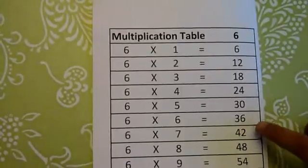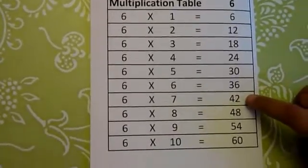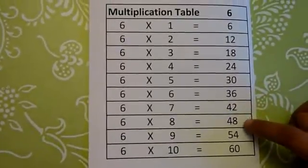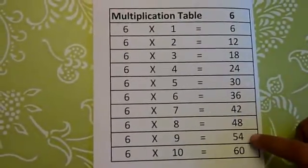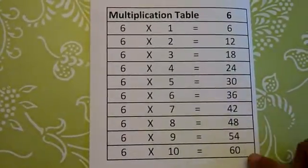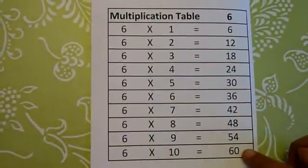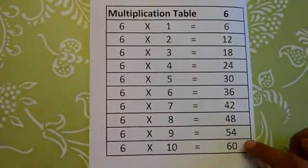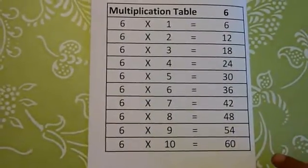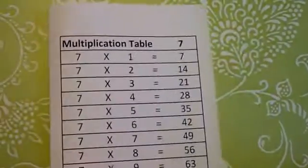6 6s are 36, 6 7s are 42, 6 8s are 48, 6 9s are 54, and 6 10s are 60. Now we'll go on to multiplication table 7.